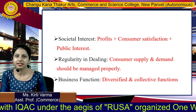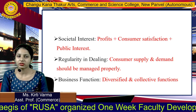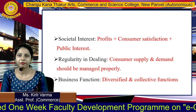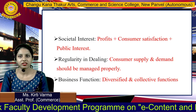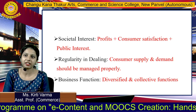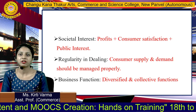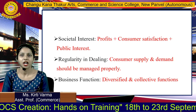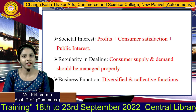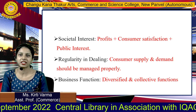Next is societal interest. Business is carried out for the interest of society. Societal interest involves profit plus customer satisfaction plus public interest. Profit is generated, the main focus is to satisfy and delight customers, and also for the benefit of the public. Next is regular dealings. Regularity means there should be a proper flow of goods and services, which involves inventory management, logistic management, proper warehousing and transport facility, so that consumer supply and demand are managed properly.